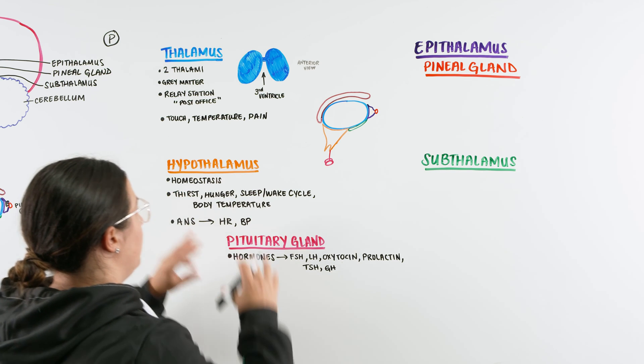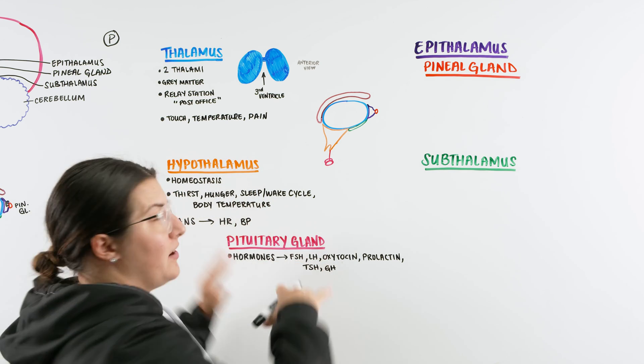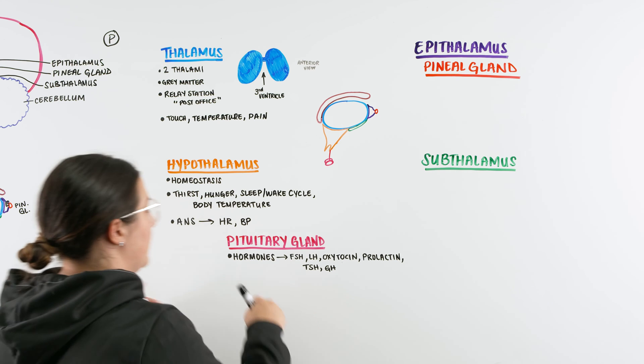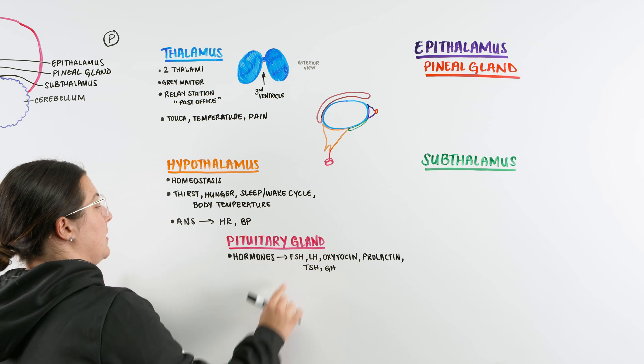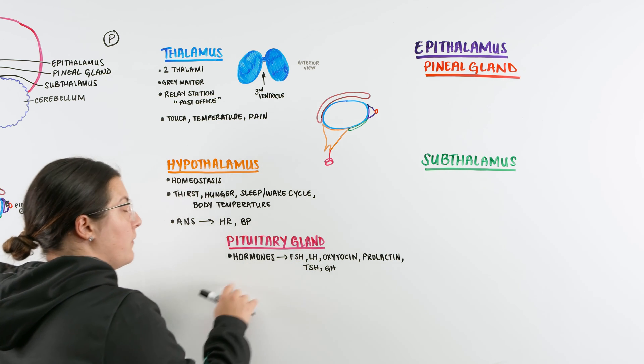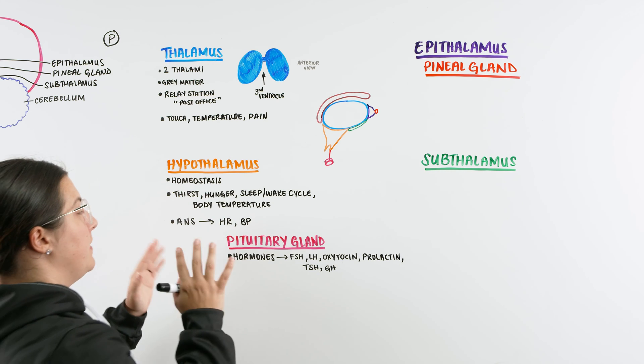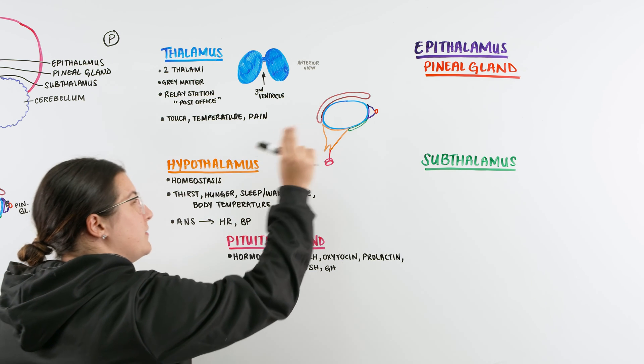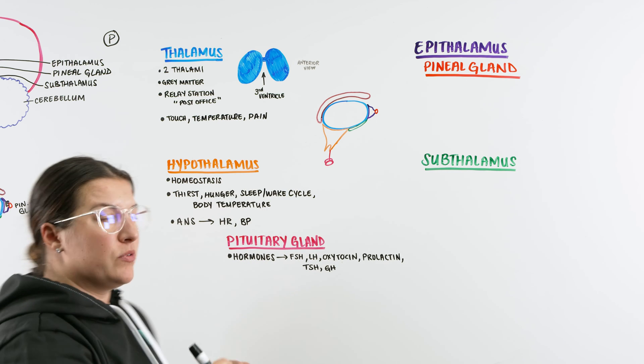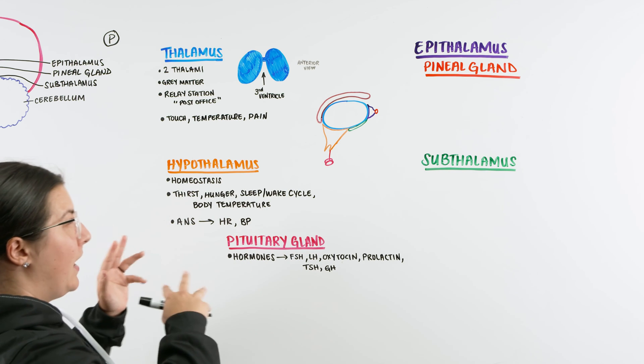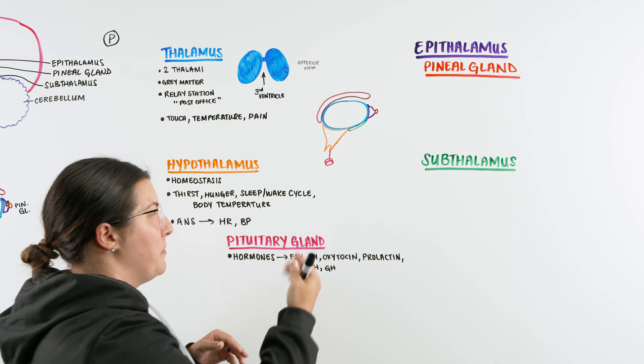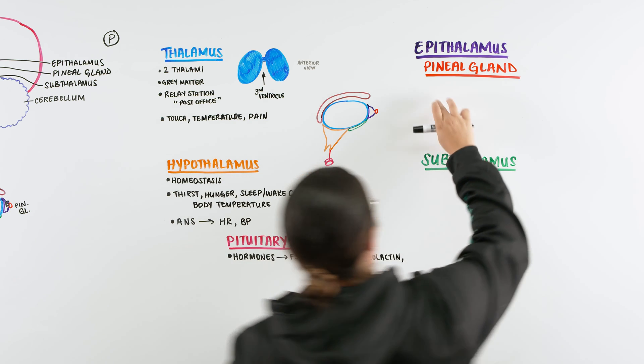So now that we understand that the hypothalamus is our area of homeostasis that has also the pituitary gland that does a lot of regulation of hormones, we can understand that there is a lot going on within this very, very minute portion of the diencephalon deep within the center of our brain. Now we can also talk about the epithalamus also that has the pineal gland.